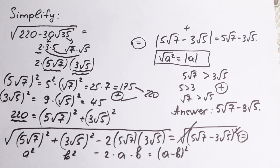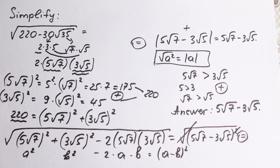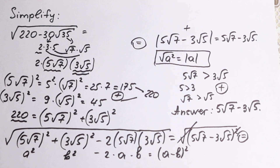So we have 5 square root of 7 minus 3 square root of 5 — this is our final answer. Really interesting problem. I hope you enjoyed this video. If you did, leave a like and write any comment. I really appreciate it and it helps me a lot to improve my content. Please support my channel. Thank you and see you in the next videos.